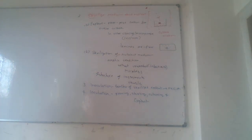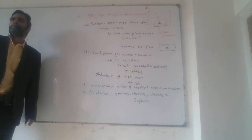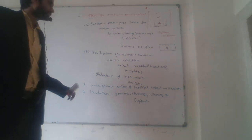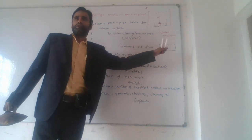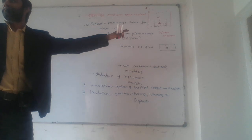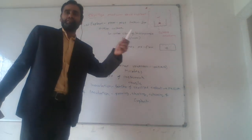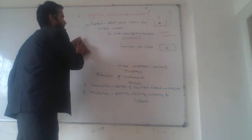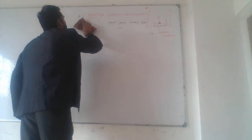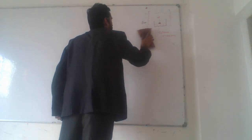If we take the endosperm for tissue culture, what will be the ploidy of the plant? It will be triploid, because endosperm ploidy is three. The autoclave is a machine like a microwave oven — we put all things inside and they are sterilized automatically. Any bacteria, virus, or anything in the utensils will be killed.